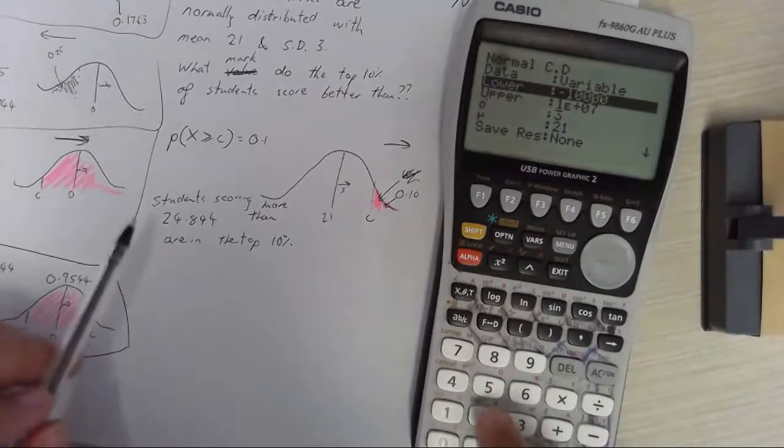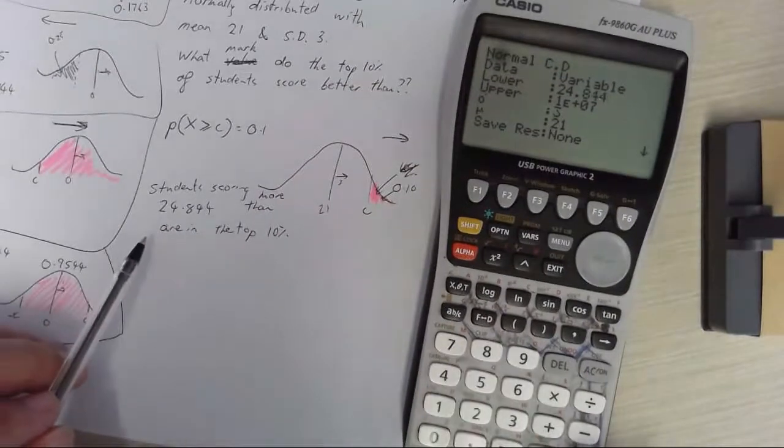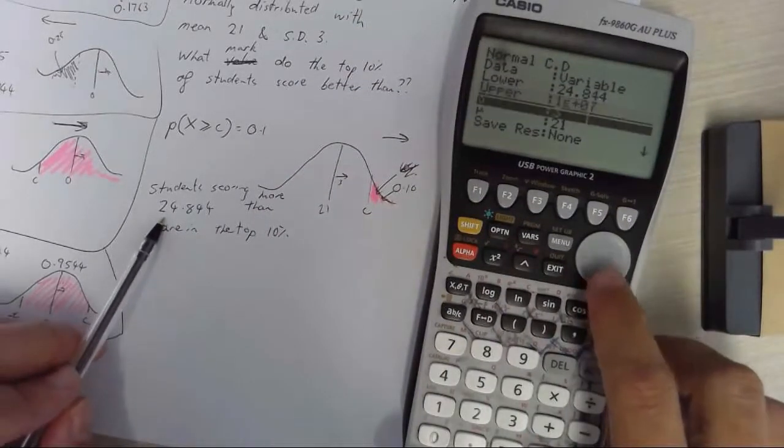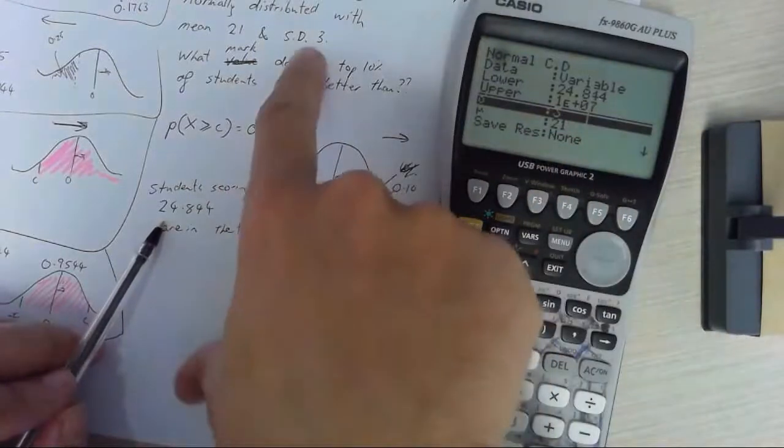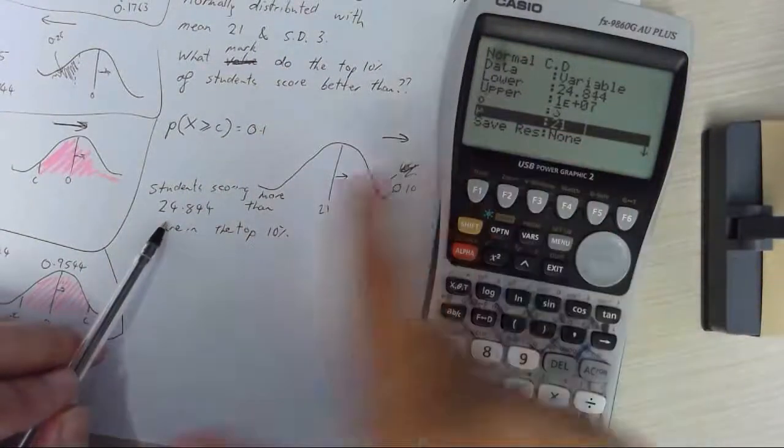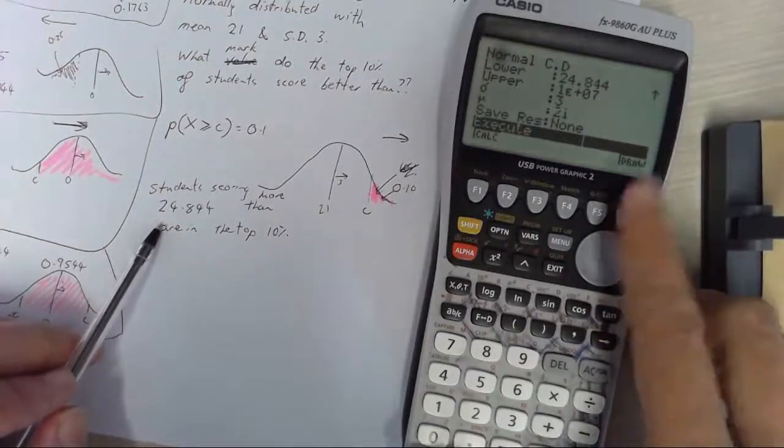Now the upper is like a million right? The lower is the number I just came up with 24.844. The what have we got? Standard deviation of 3, mean of 21. Let's draw it up.